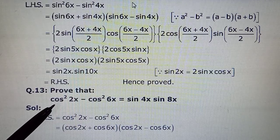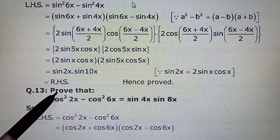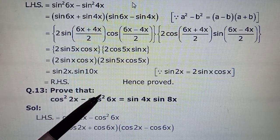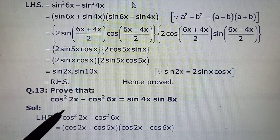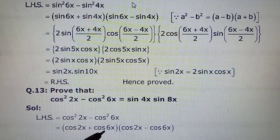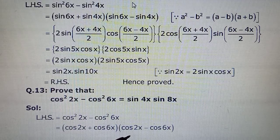Thirteenth one is also similar. It's cos now. Again cos²2x - sin²6x. So A + B, A - B, we will write it as cos 2x + cos 6x, cos 2x - cos 6x.